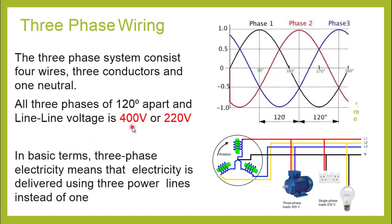In very basic terms, three-phase electricity means that electricity is delivered to the load using three single-phase power lines. As you can see, we can connect both three-phase and single-phase loads to a three-phase supply at the same time, because in three-phase supply we also have the neutral. By using any phase and neutral we can run a single-phase appliance, and by using all three phases we can run a three-phase load.